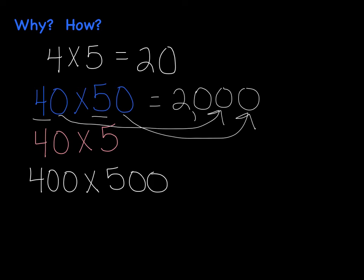If we do the same thing with the pink here, we have 4 times 5, which is our basic fact, which we just said was 20. And then we have one zero that we're going to put over here. So, that answer would be 200.